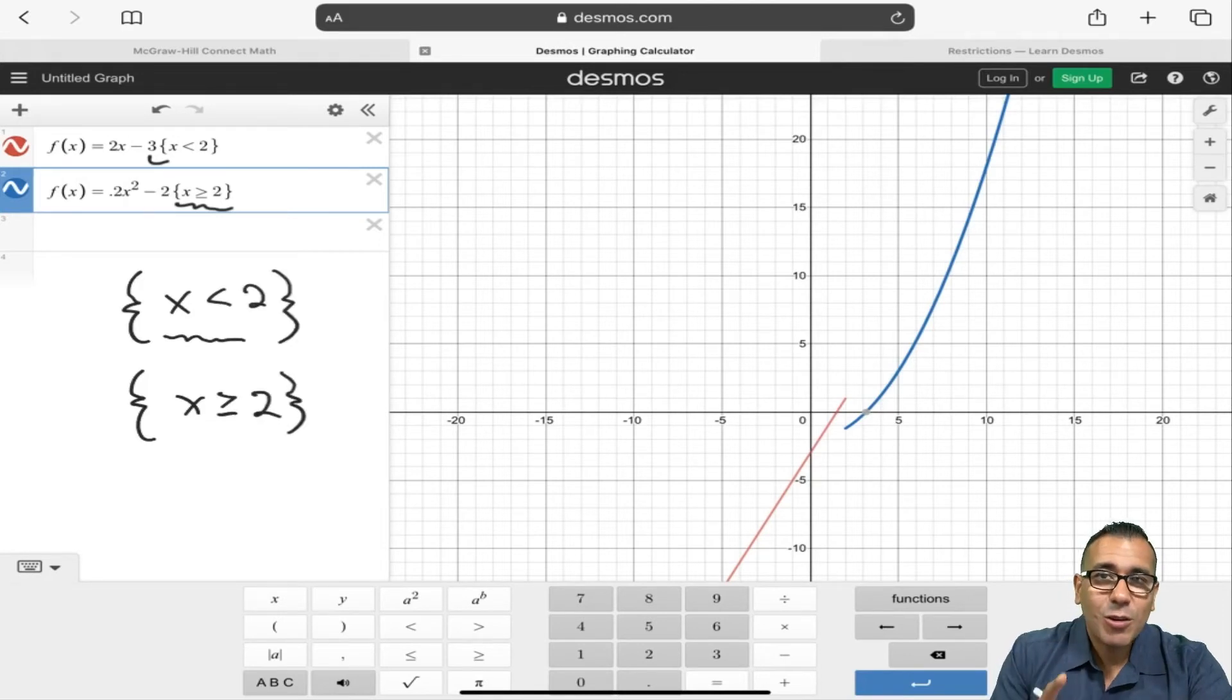So make sure that you're throwing in those curly brackets, and that's going to tell it where to start and finish. And it's that easy, mathletes.